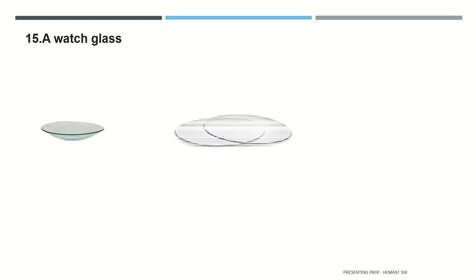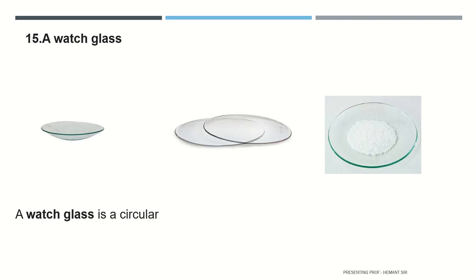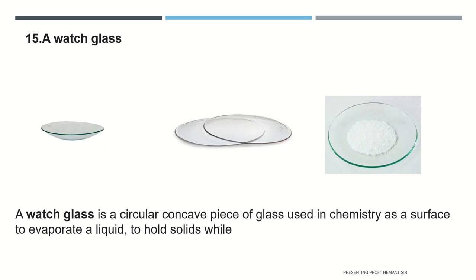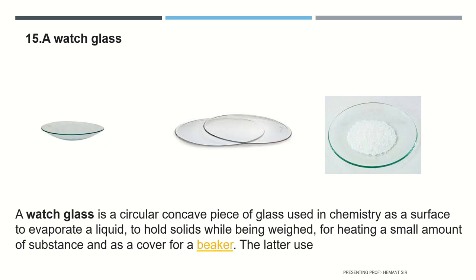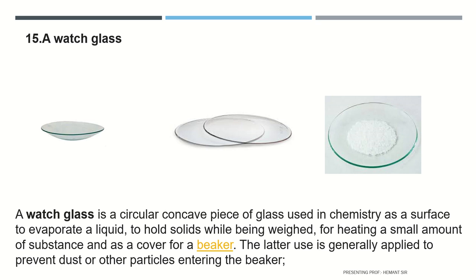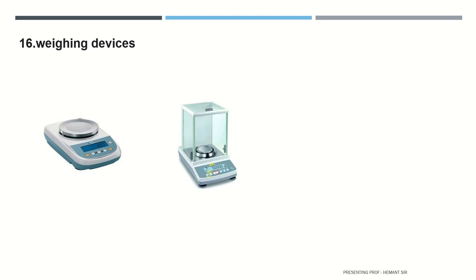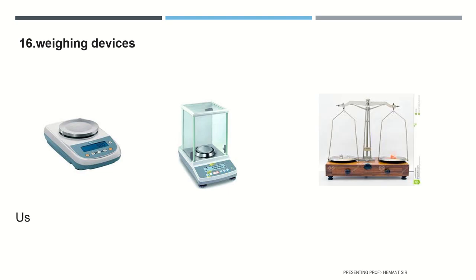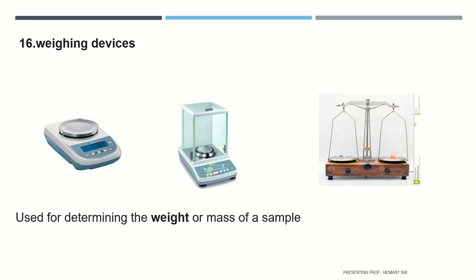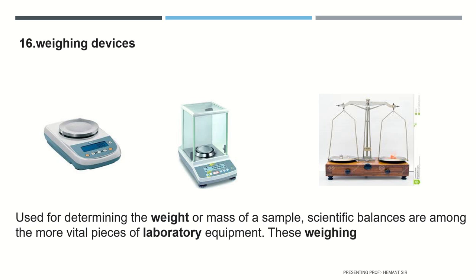A watch glass is a circular concave piece of glass used in chemistry as a surface to hold particles or samples. Number sixteen covers weighing devices — digital weighing devices used for determining the weight or mass of a sample. Scientific balances are among the more vital pieces of laboratory equipment and are available in a variety of sizes and weight capacities.